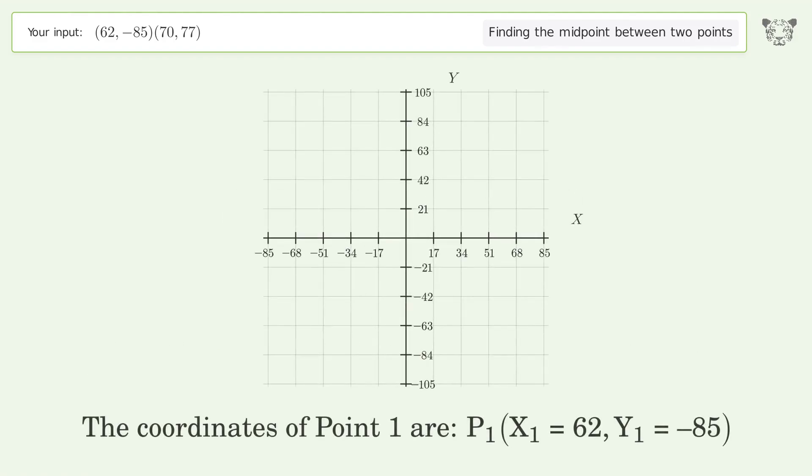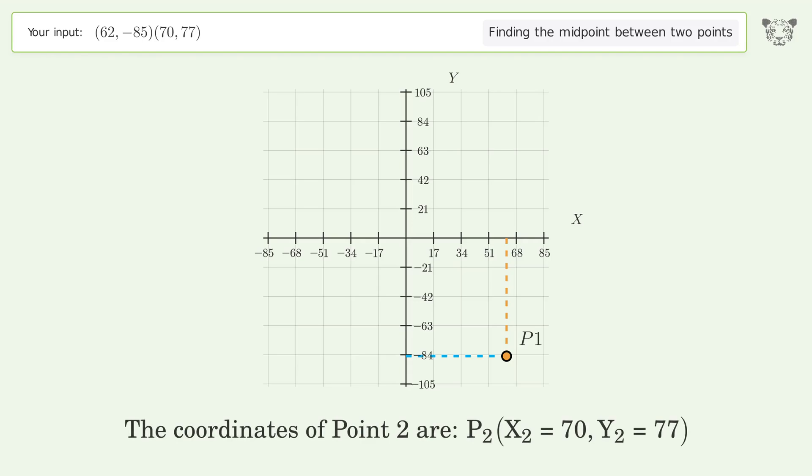The coordinates of point 1 are x₁ = 62, y₁ = -85. The coordinates of point 2 are x₂ = 70, y₂ = 77.